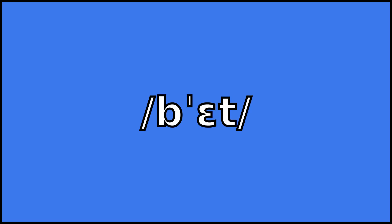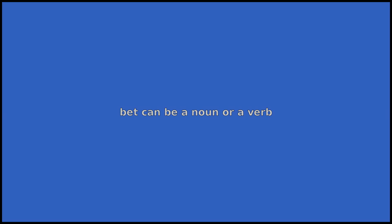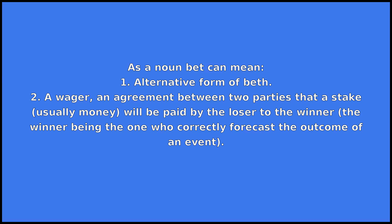Bet can be a noun or a verb. As a noun, bet can mean: one, an alternative form of 'beth'; two, a wager — an agreement between two parties that a stake, usually money, will be paid by the loser to the winner, the winner being the one who correctly forecast the outcome of an event.